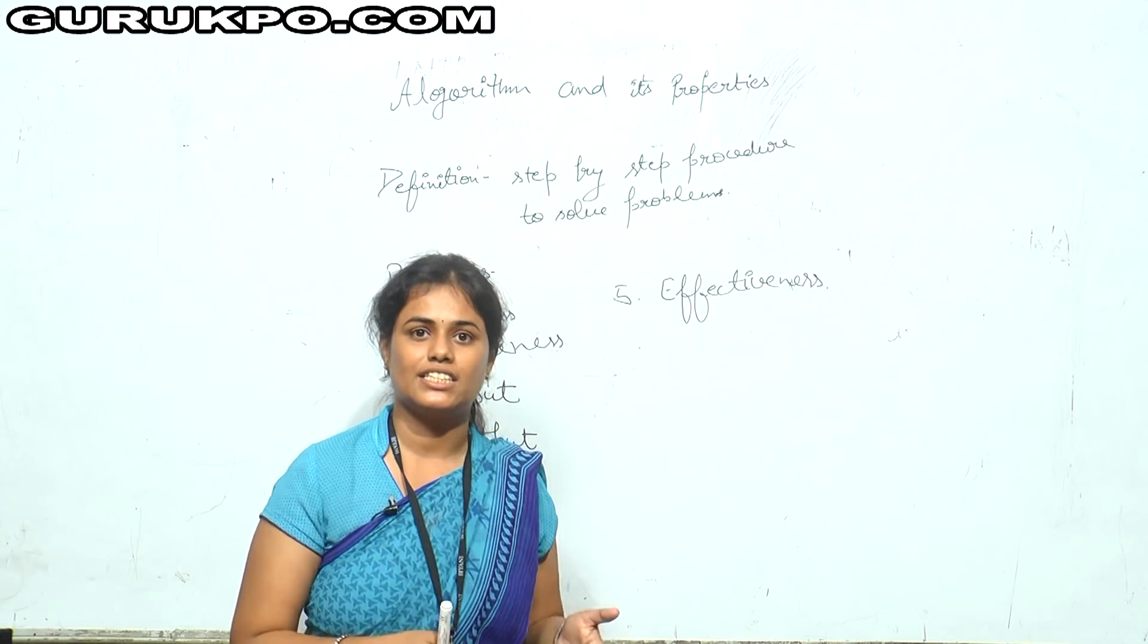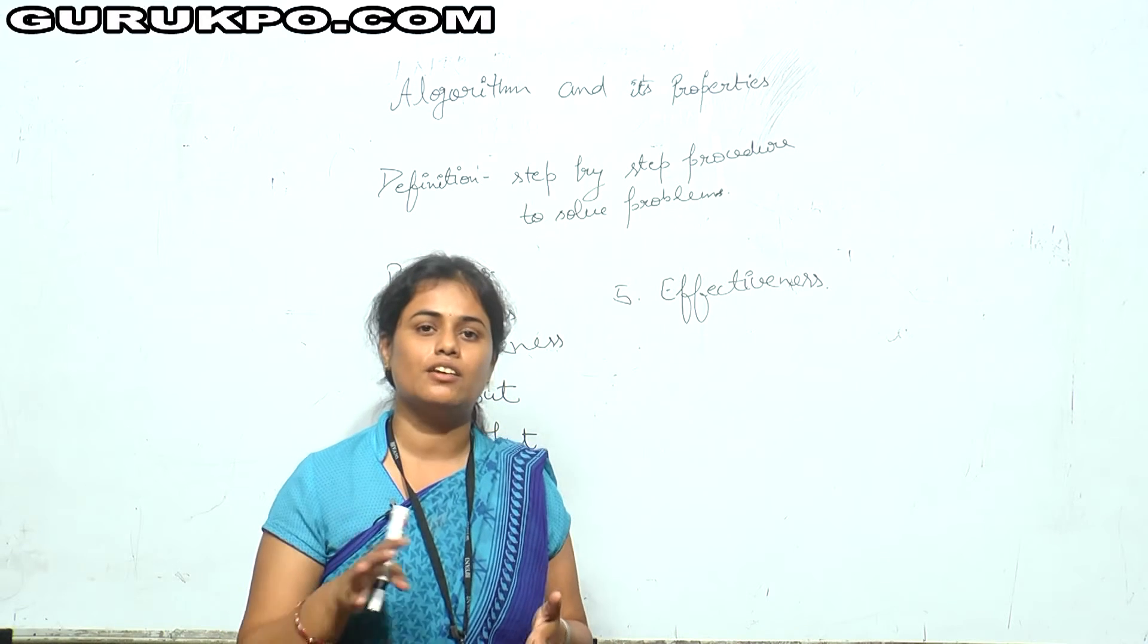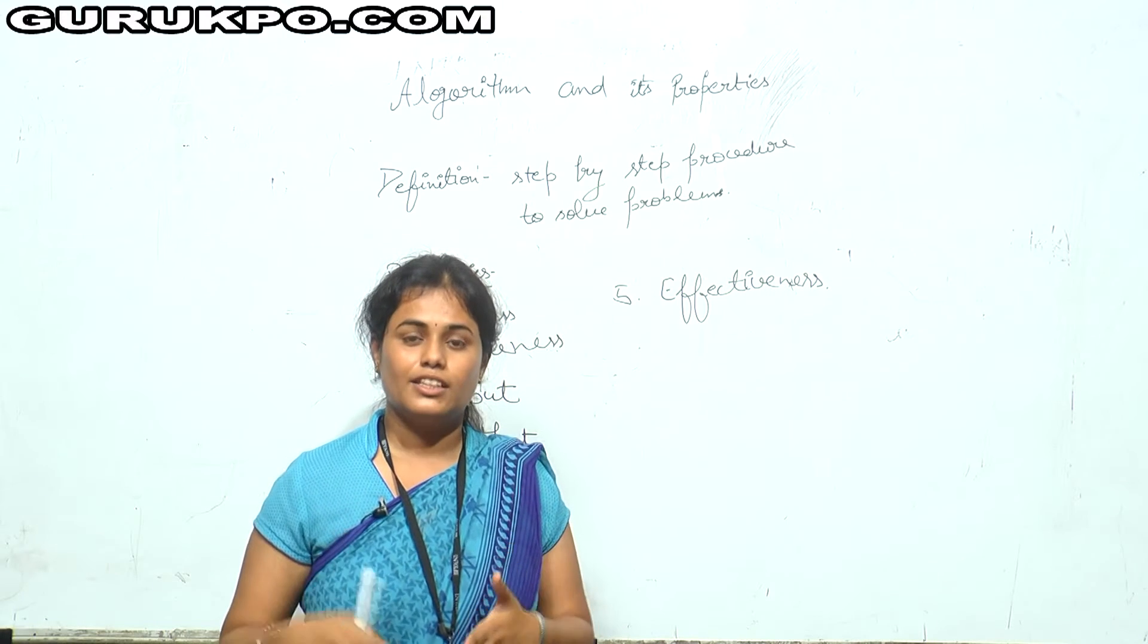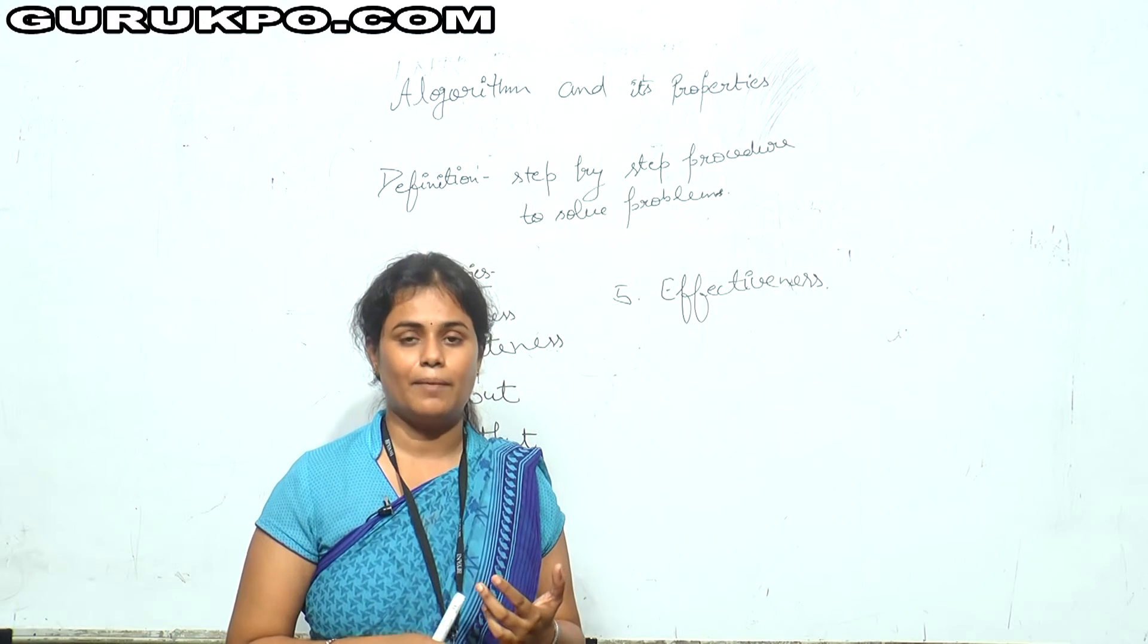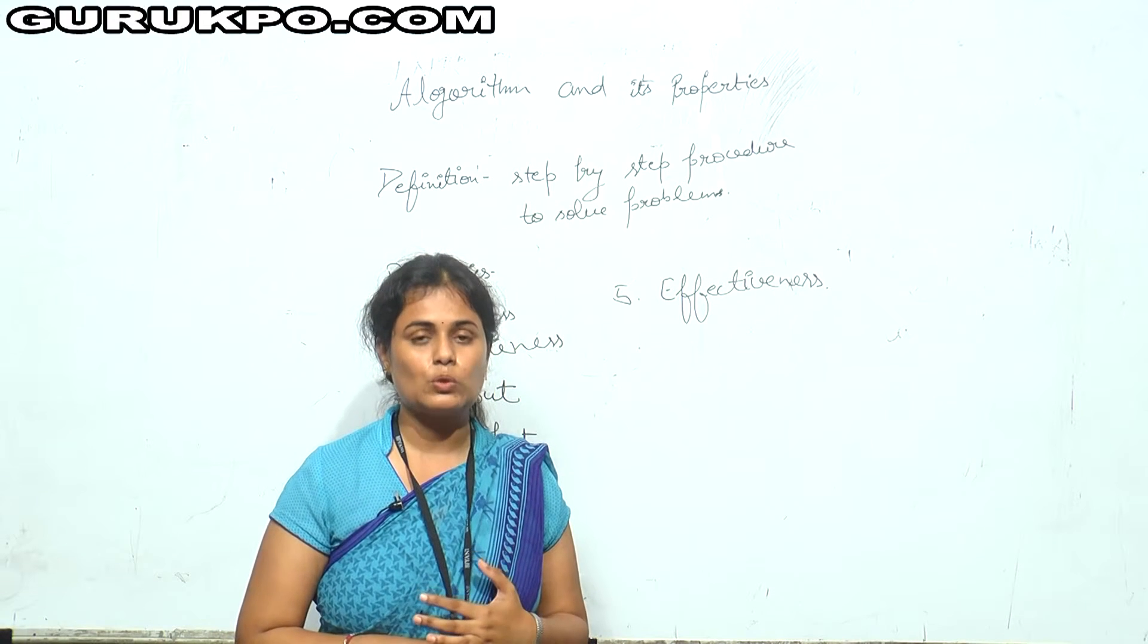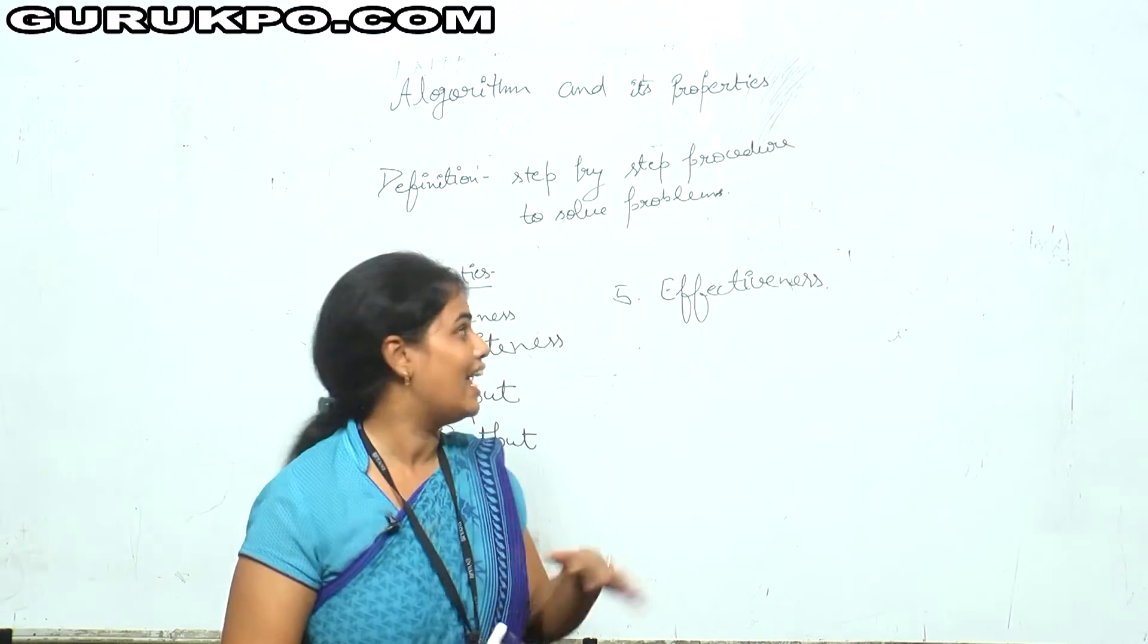You can write the algorithm like this: put on the burner, on the gas. Then you will add sugar, milk and tea. In this way the problem is solved. The problem can be anything like mathematics, like household or any complex problem. So step by step procedure to solve any problem is called algorithm.